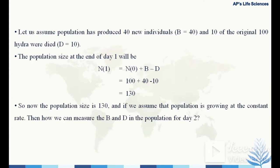The new population after one day is 130. If we assume the population is growing at a constant rate, we need to determine b and d for day 2. Let's analyze how we can calculate the population for day 2.